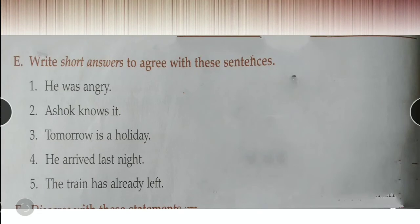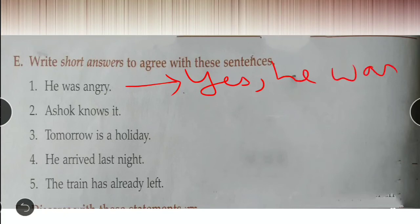Now let's move towards the next exercise E. Write short answers to agree with these statements. One was questions and the other was sentences. You are giving answers to the sentences. He was angry. How would you give the answer for this statement? You don't have to write about yourself, you have to write about the statement. One thing is given here to agree. Agree means you have to use yes only in all the sentences.